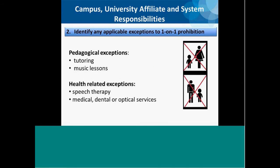Two: identify any applicable exceptions to the one-on-one prohibition. The Child Protection Policy prohibits one-on-one contact between adults and children — in other words, adults may not be alone with children. The local procedures developed to implement the policy may, however, create exceptions to the one-on-one prohibition if such exceptions are warranted.